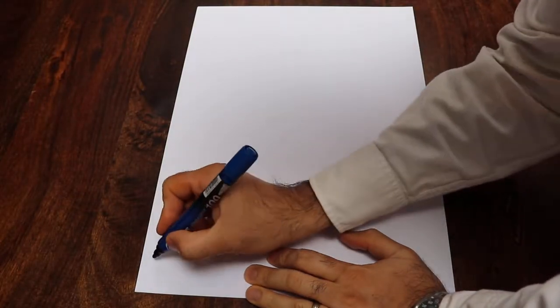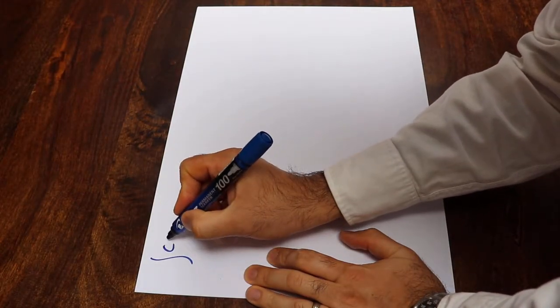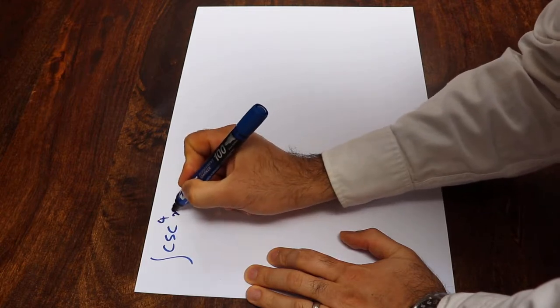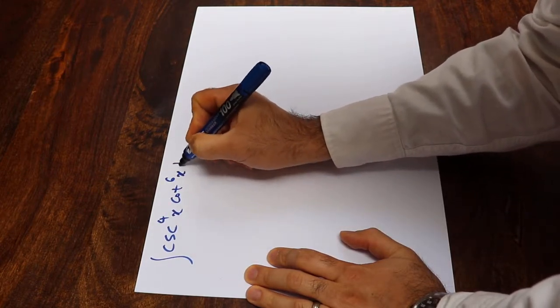Hello, today I'm going to show you how to calculate the integral of cosecant 4x times cot 6x dx.